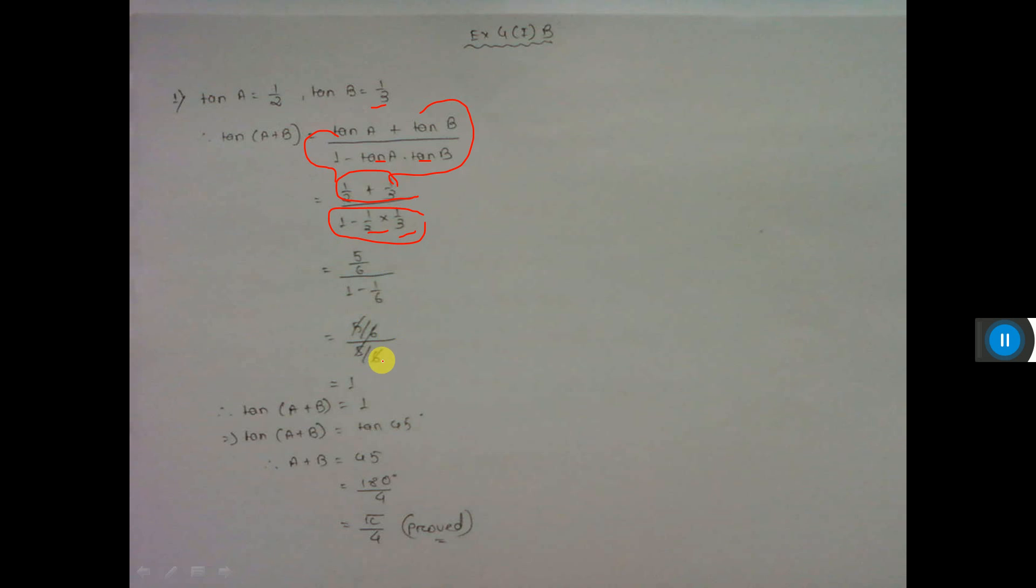So here 5 by 6, and here also 5 by 6, so you cut. That means tan(a + b) value is equal to 1. Now 1 means tan 45 degrees, so a plus b equals 45 degrees. Now 45 degrees means π by 4 radians if you want to convert.